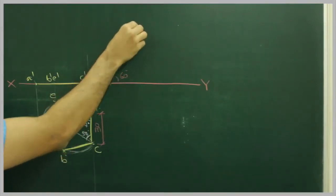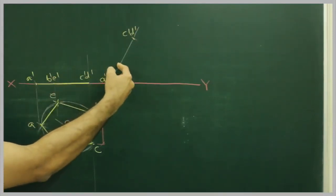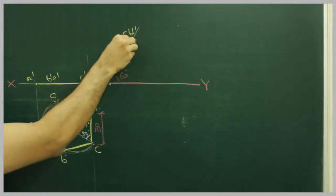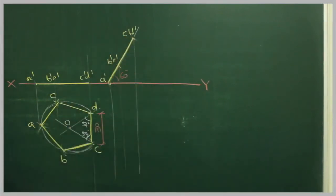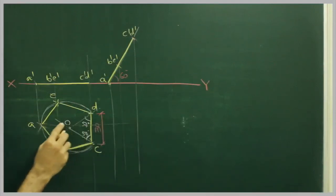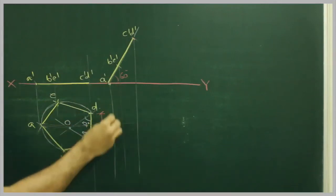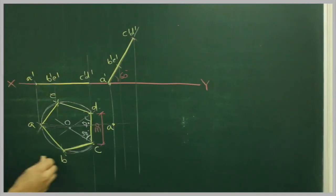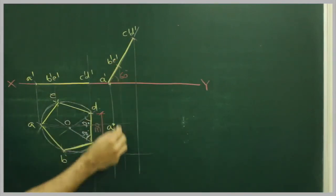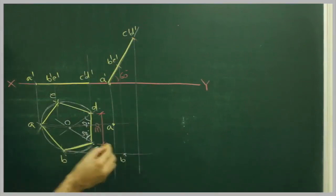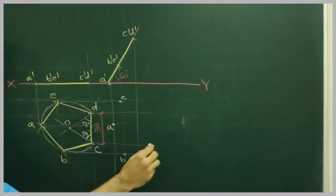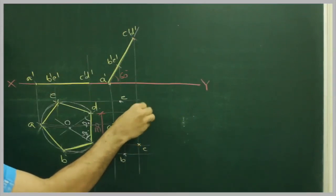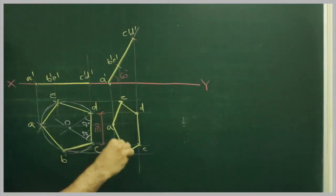You project from A, wherever it will intersect with A dash that is point A. You project from B, wherever it will intersect with B dash that is B. You project from E dash and from E you get point B. Same way, C dash, D dash give you points C and D. You're done.